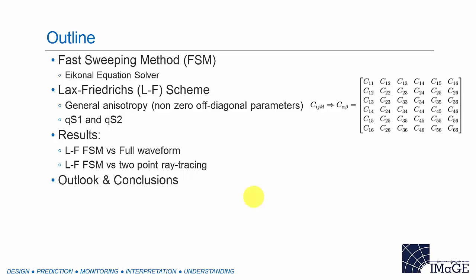In the following slides, I'll introduce the background of the fast sweeping method, which was originally designed to solve the eikonal equation for isotropic models. To extend it to a general anisotropic model, we use the Lax-Friedrich scheme so we don't rely on an analytical expression of the eikonal equation. All we need are the eigenvalues from the Christoffel matrix. In theory, that can handle general anisotropy. As long as the off-diagonal elastic parameters in the 6x6 elastic parameter matrix become non-zero and non-negligible, you would want to use these techniques. Another benefit is it gives you a unique fast shear wave arrival and a unique slow shear wave arrival, so it can be used as a forward engine for shear wave splitting analysis.